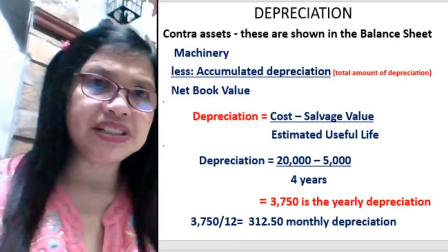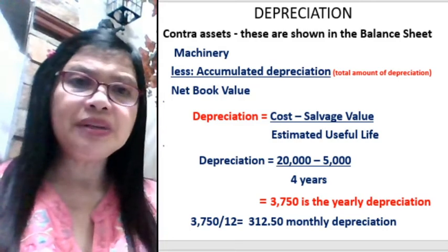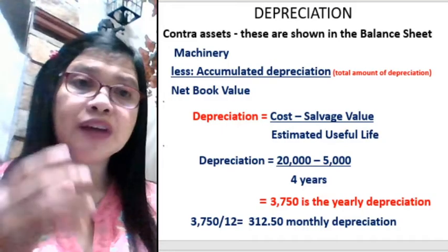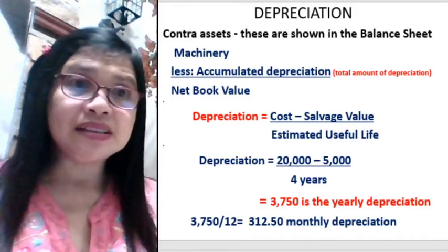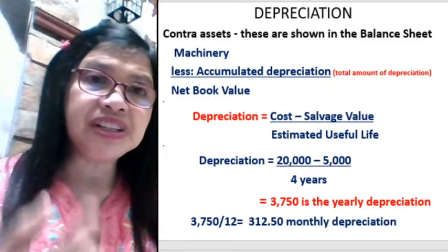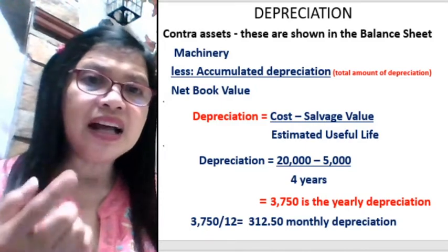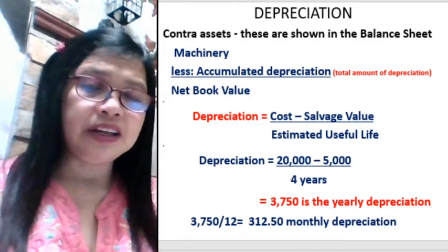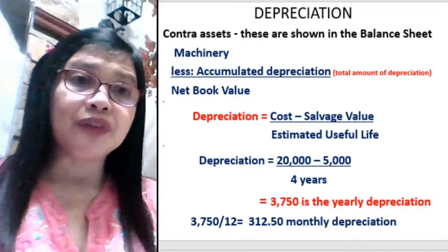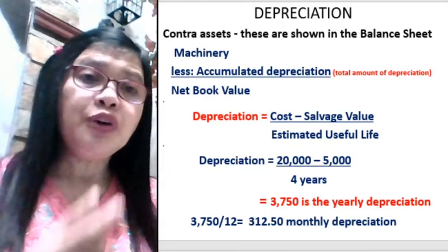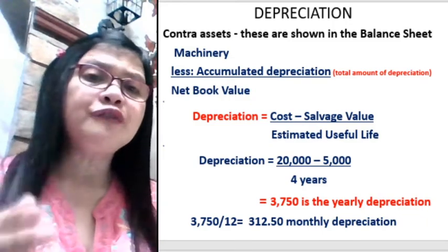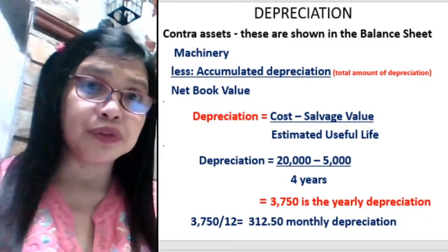Now we go to depreciation. Depreciation is when you allocate the cost of an asset over its estimated useful life. For example, we have machinery with a cost of $20,000. The salvage value is the value of the asset after it has been fully used or after its estimated useful life. So, for example, the machinery has an estimated useful life of four years.